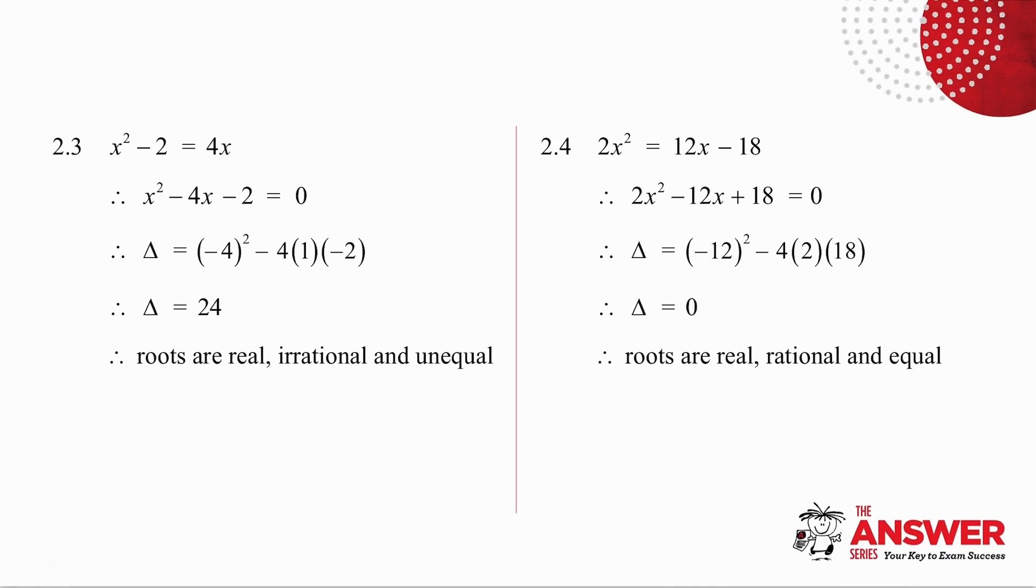In 2.3, again I put the equation into standard form so I can get my a, b, and c values, and I work out delta to be 24. 24 is positive, so the roots are real. 24 is not a perfect square, so the roots are irrational. And 24 is not equal to 0, so the roots are unequal.